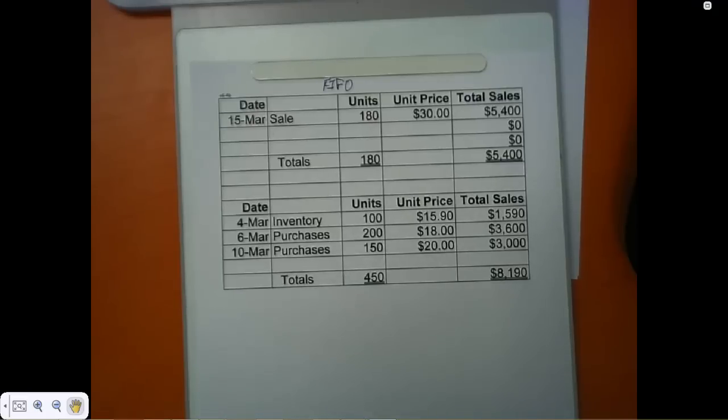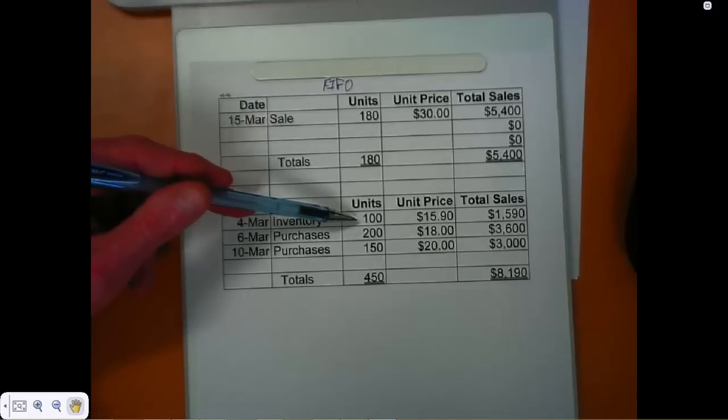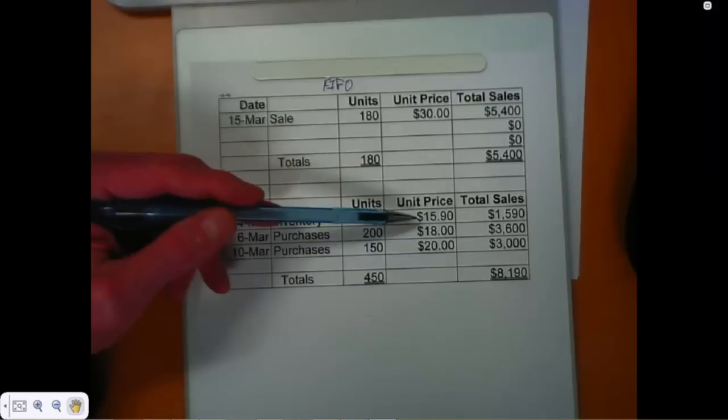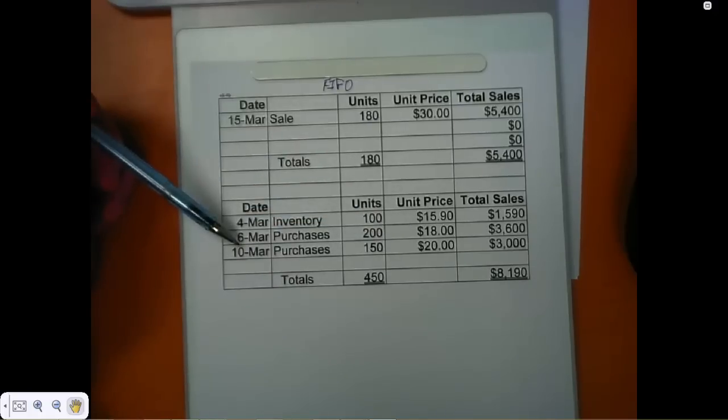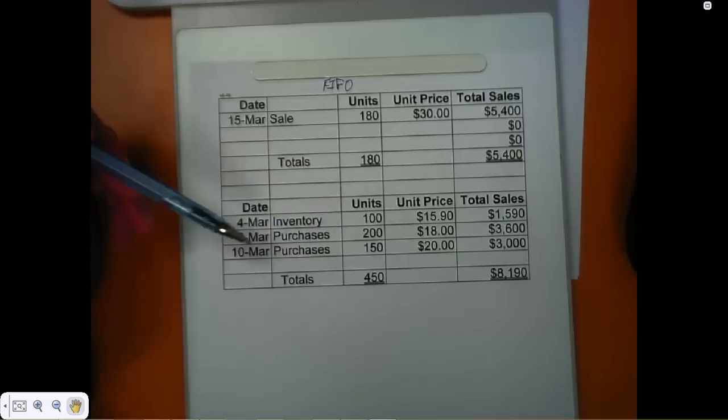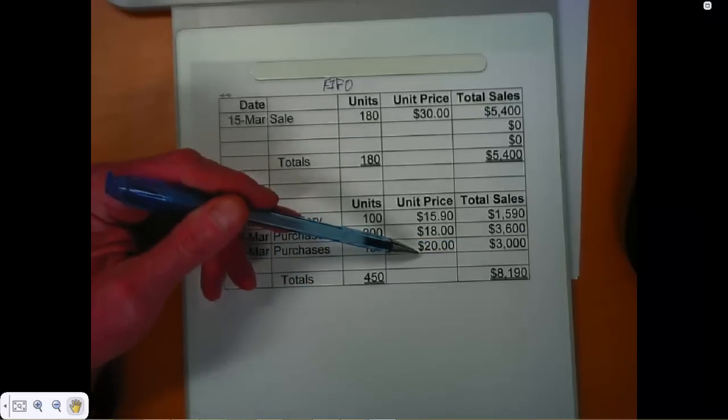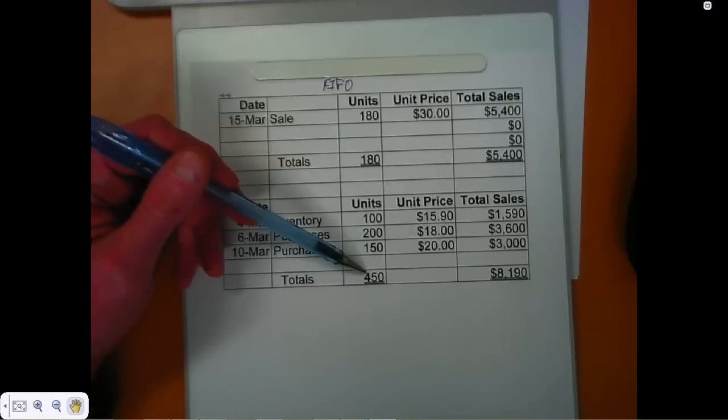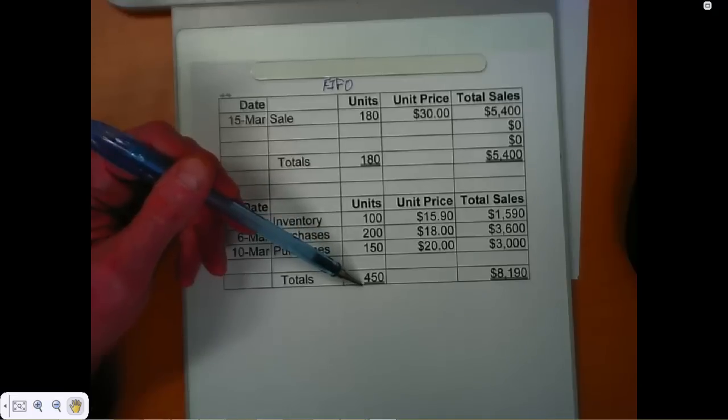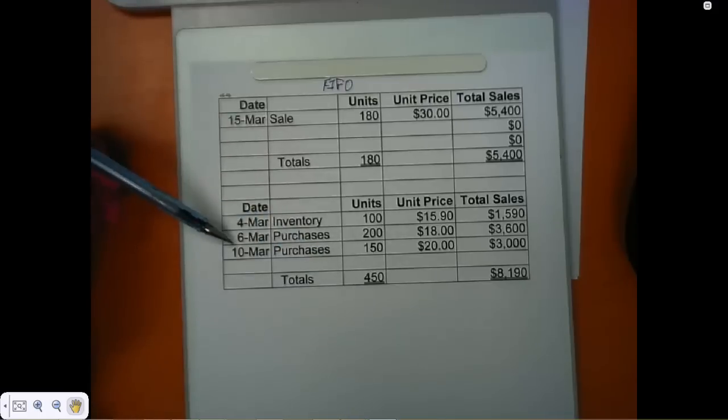This is problem E64B. The given information states that we had beginning inventory on March 4th of 100 units valued at $1,590, which works out to a unit price of $15.90. Then on March 6th the firm purchased 200 units for $3,600, which is $18 per unit. Their final purchase on March 10th was 150 units for $3,000, or $20 per unit. In total we have 450 units available in inventory, comprised of the 100 we started with and the 350 purchased on March 6th and March 10th.